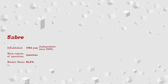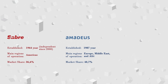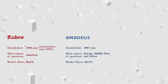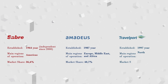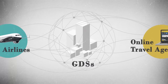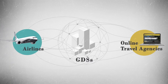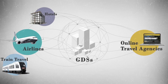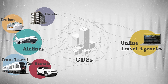Sabre, which became an independent business in 2000; Amadeus, established in 1987 by four European airlines; and Travelport, a UK-based GDS, formed through a merger of smaller providers. Besides air travel, GDSs now support hotel room distribution, train travel, cruises, car rentals, and even airport transfers.